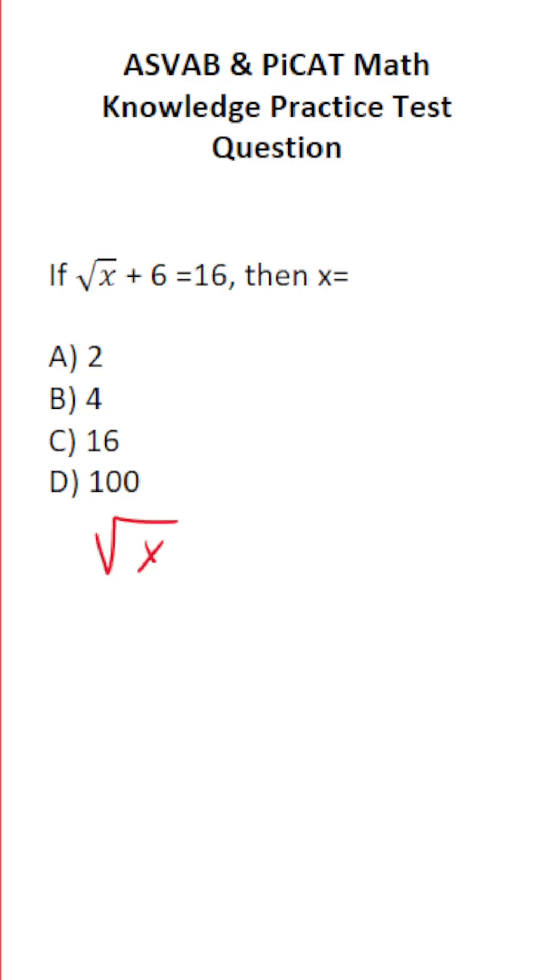So I'm going to start by copying this one down. The square root of x plus 6 equals 16. Again, we're solving this equation for x. We want to get x equal to something by itself.